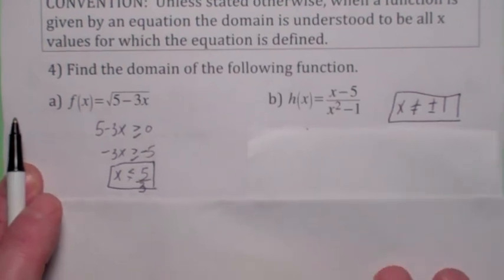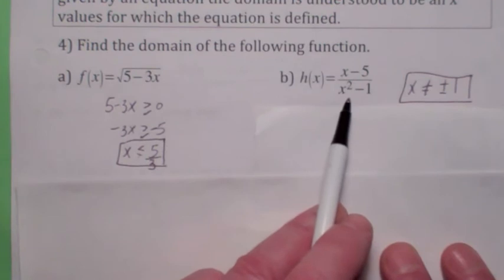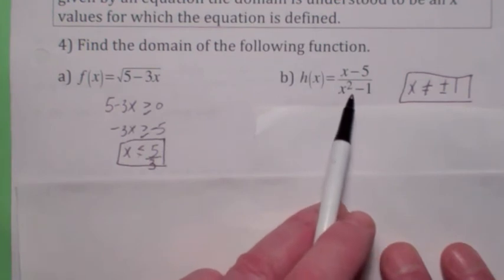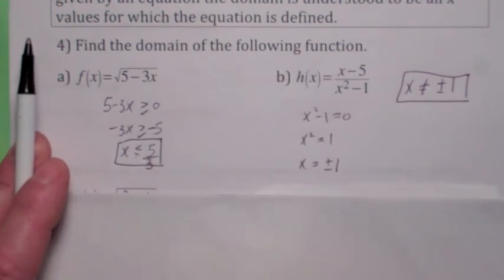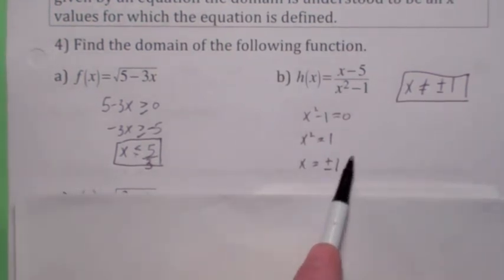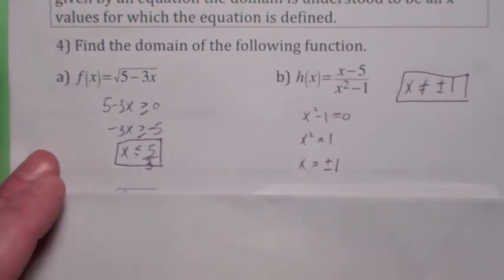The other one is, we've already looked at this, the other thing that messes up the domain is you can't have 0 on the bottom. The denominator cannot equal 0. So if you set the denominator equal to 0 and solve for x, you take the square root of both sides, don't forget the plus or minus, the domain would be everything except plus or minus 1, so x cannot equal plus or minus 1.